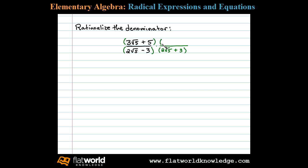Now we'll multiply the numerator by the exact same thing. In this case we're left with 3 square root of 5 times 2 square root of 5, or 6 square root of 25, plus 9 square root of 5, plus 10 square root of 5, and then plus 15.